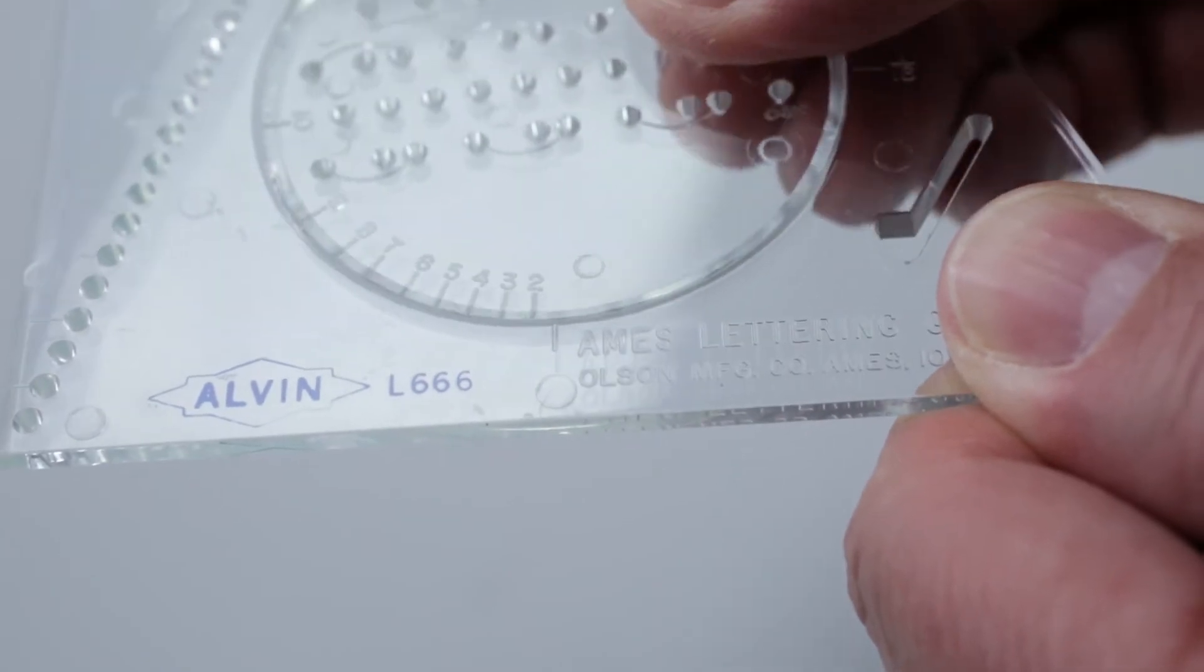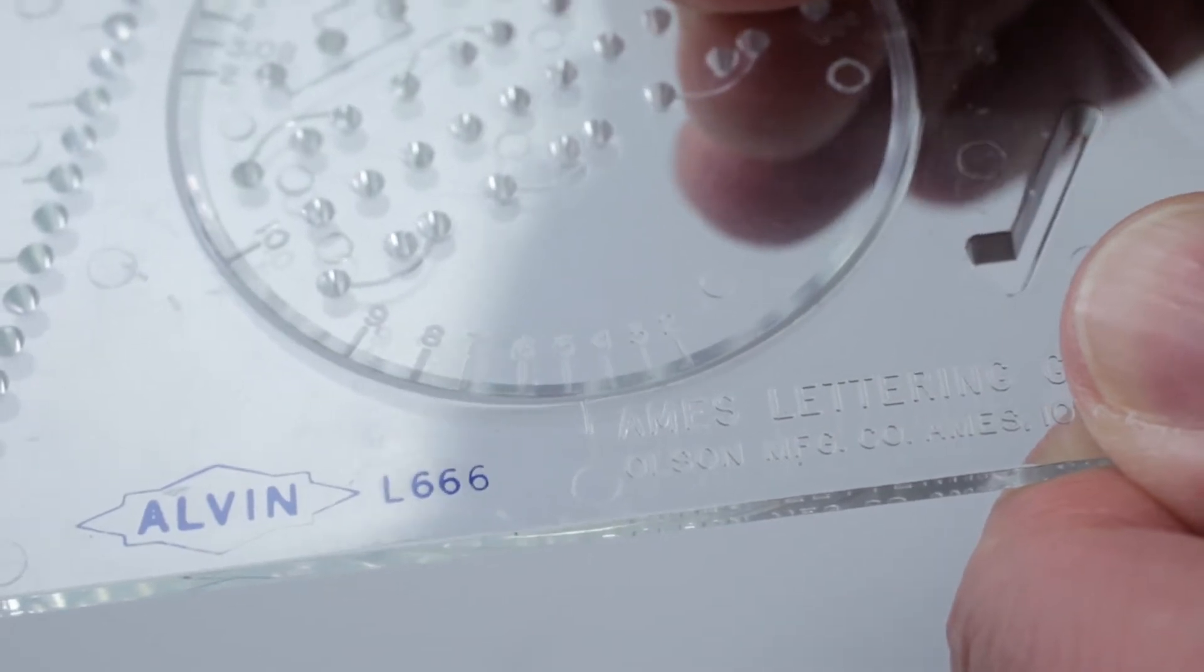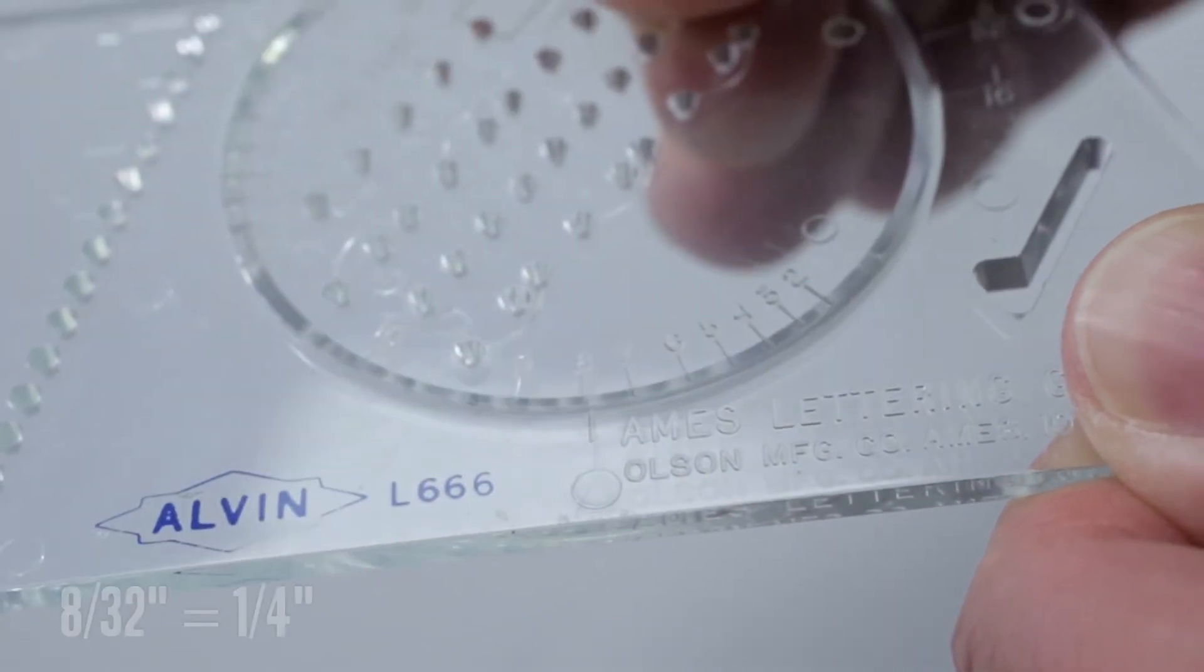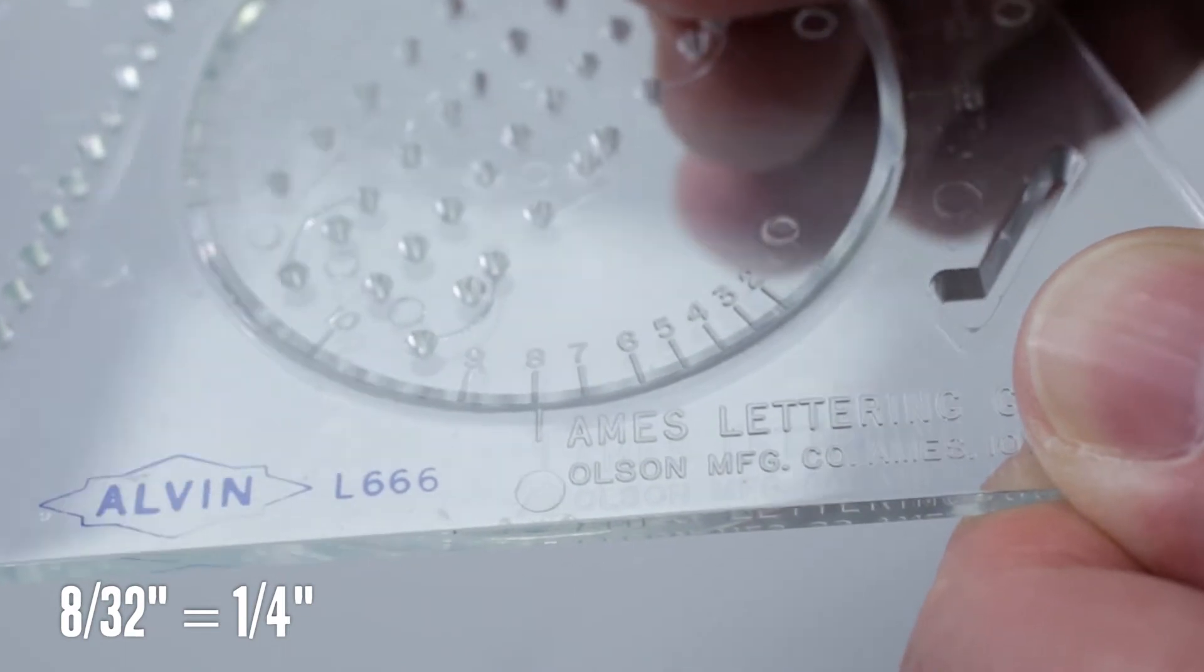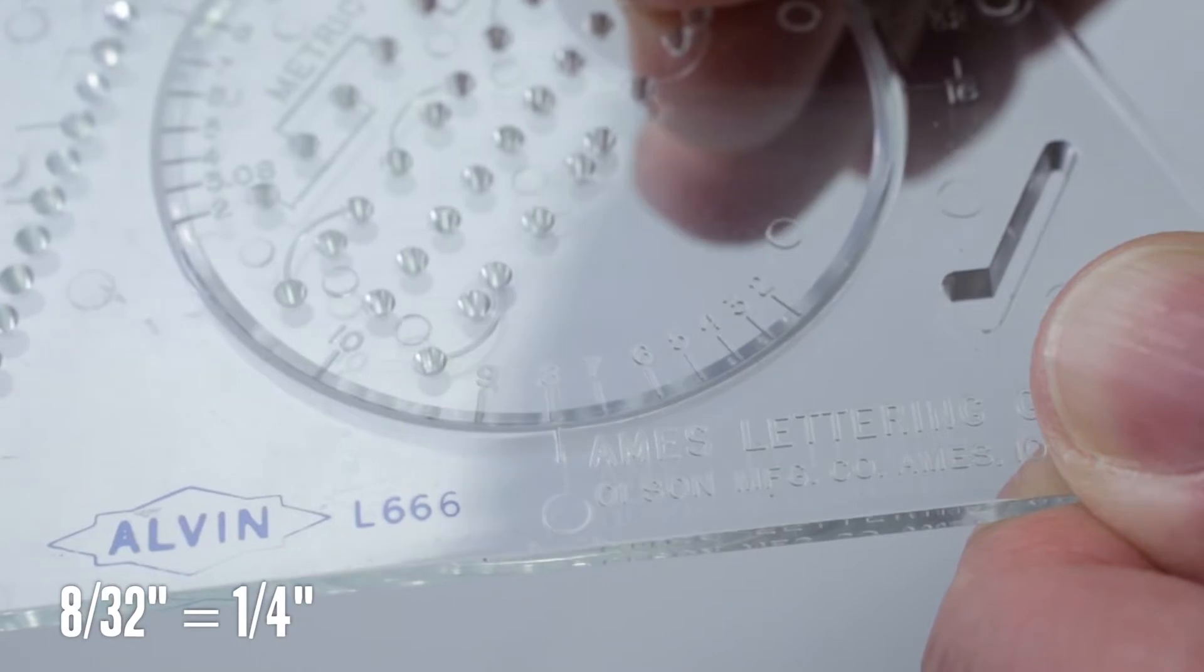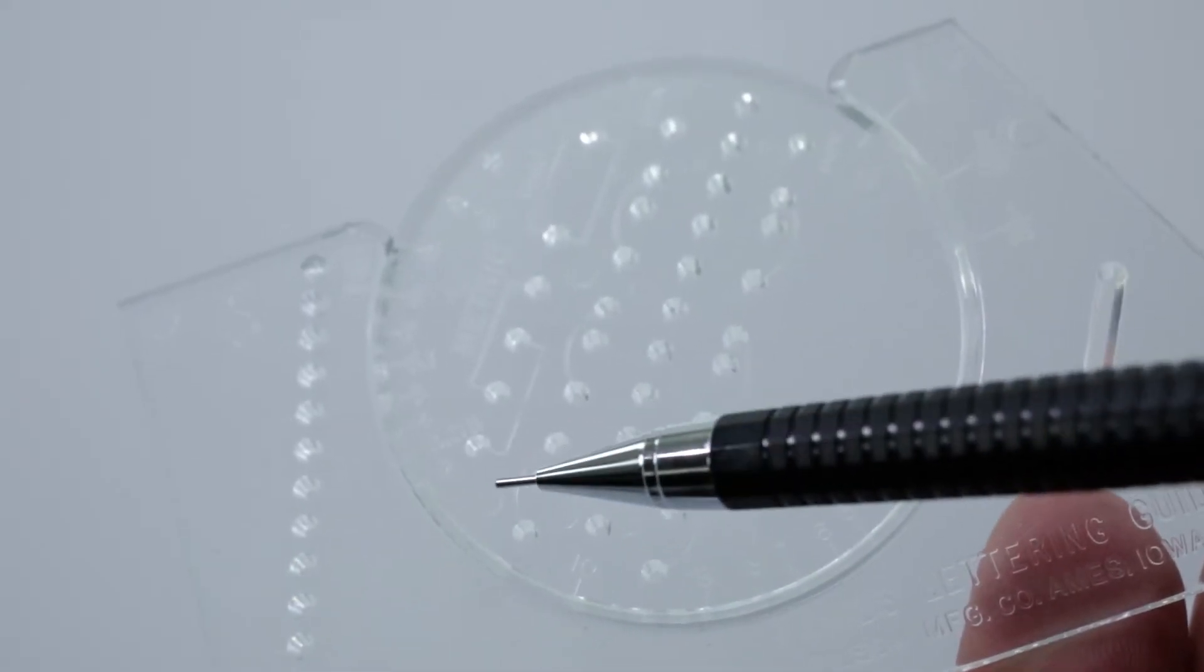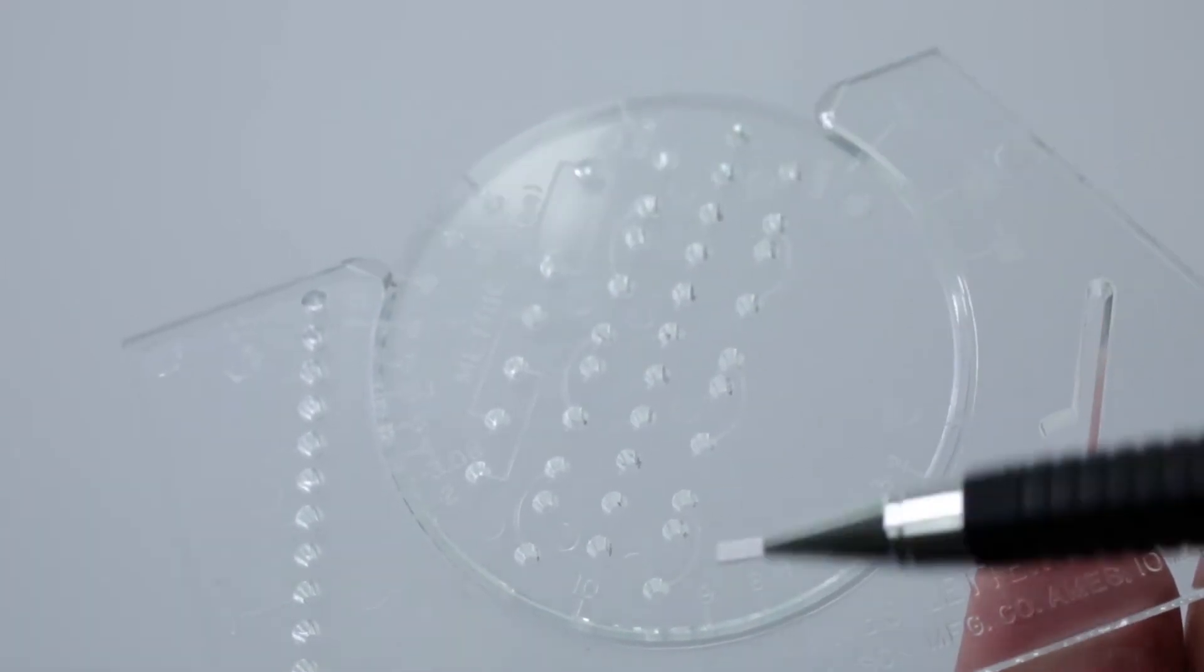The numbers from 2 to 10 on the wheel denote those increments. So, to draw quarter-inch high letters, rotate the wheel so that the 8 is at the frame index mark. 8-32 of an inch equals one-quarter of an inch. The lettering guide holes can create all sorts of configurations of 2, 3, 4, or more guidelines.